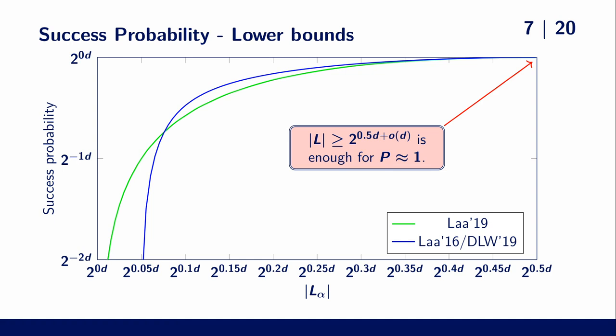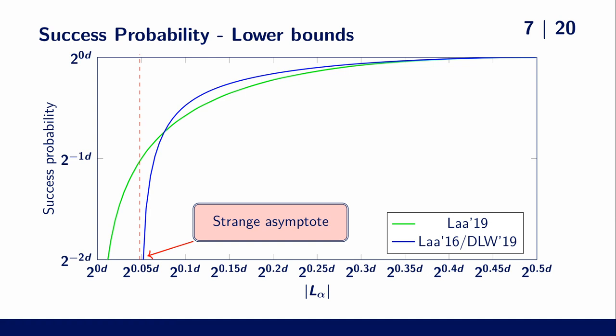But these two lower bounds have some problems. First, one of them has some asymptotes and is even undefined in the low memory regime. And secondly, given the crossover point, the union of these two bounds is unlikely to be tight with the actual success probability.